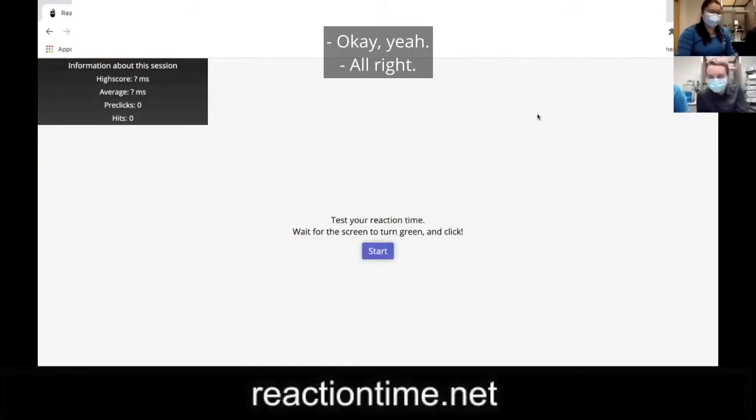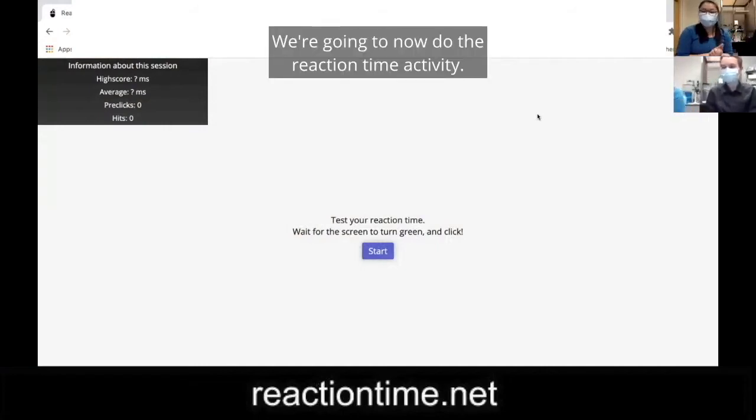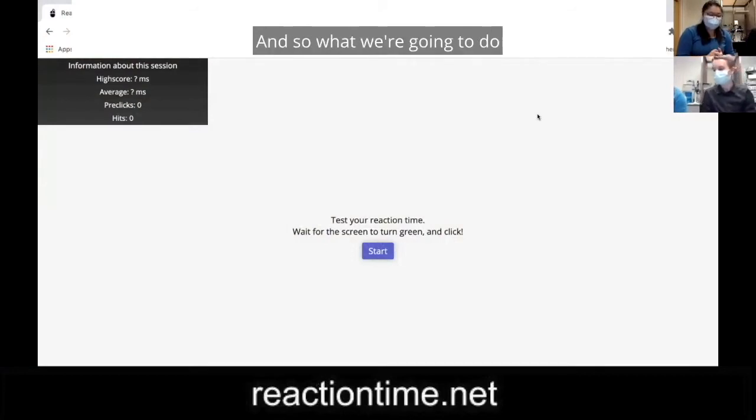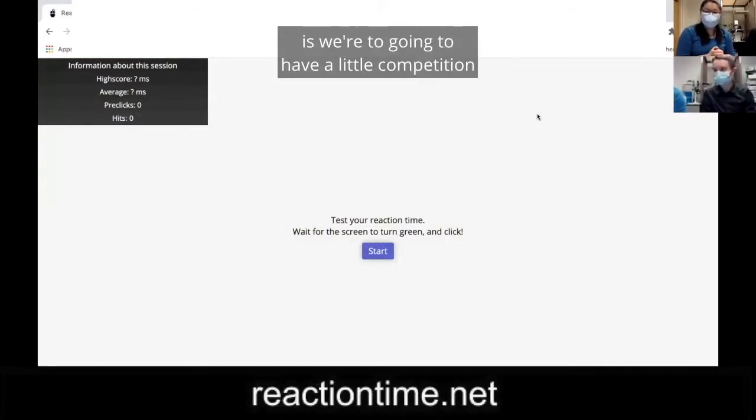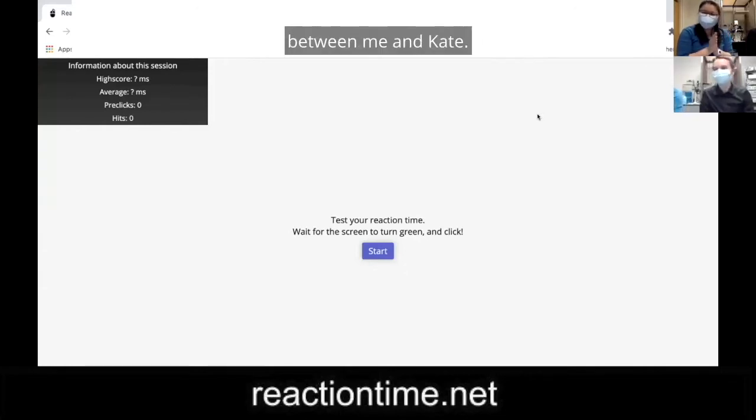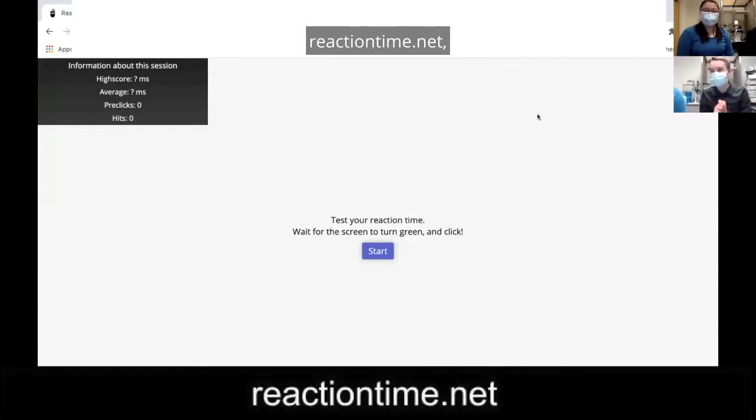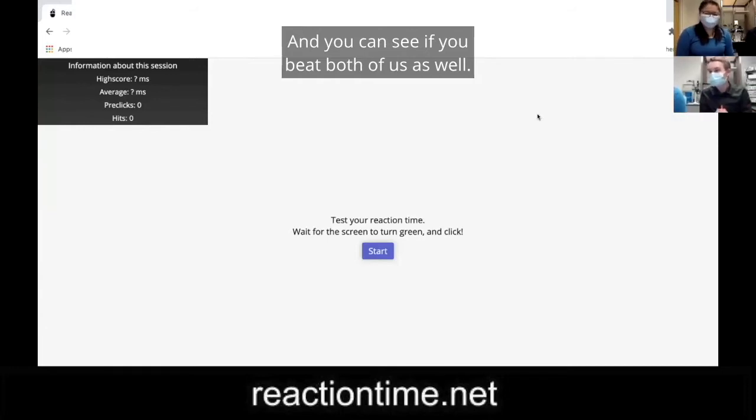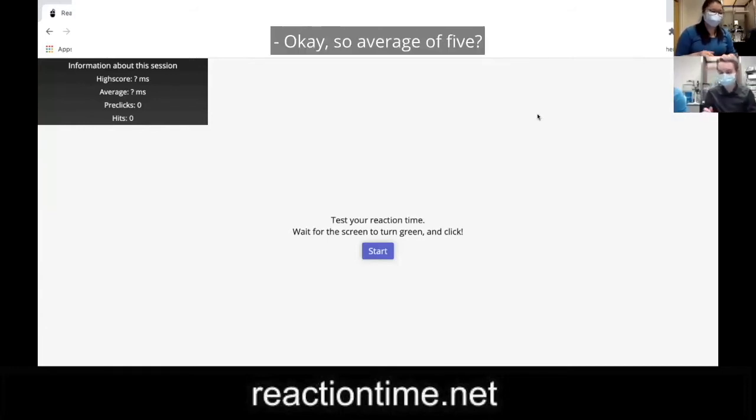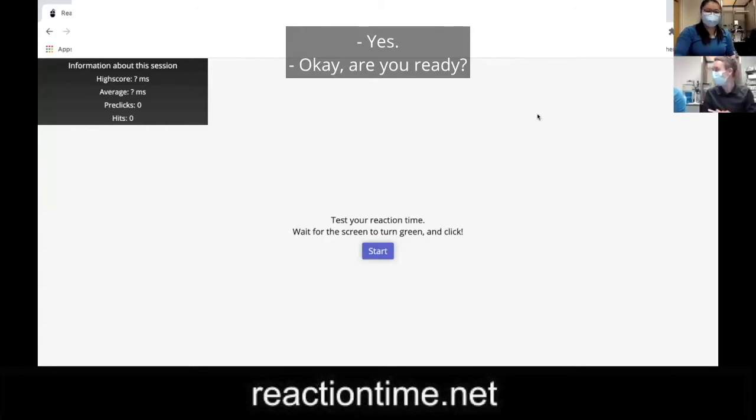We're going to now do the reaction time activity. What we're going to do is have a little competition between me and Kate. And if you want to join us, you can pull up the reaction time test website, reactiontime.net, and choose the classic mode. You can see if you beat both of us as well. Average of five. Are you ready? Set. Go.